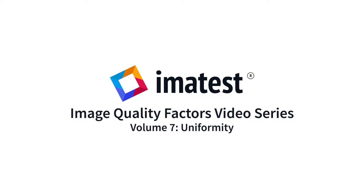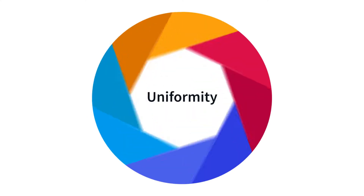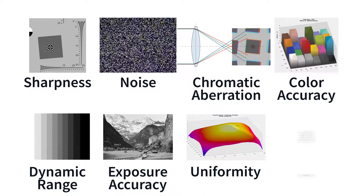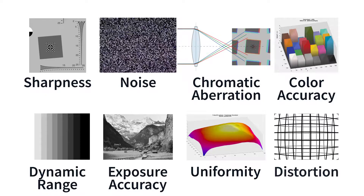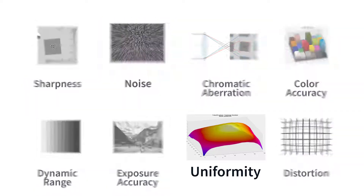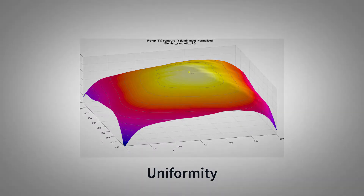The highest quality images are produced by optimizing many key factors. This video series will describe the nature of each image quality factor and explain how they can be measured using Imatest. Luminance non-uniformity, also known as light falloff,